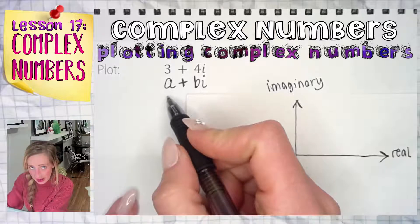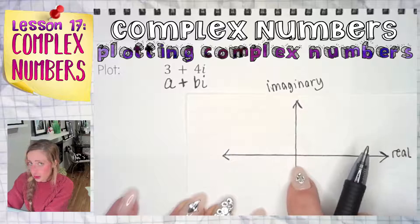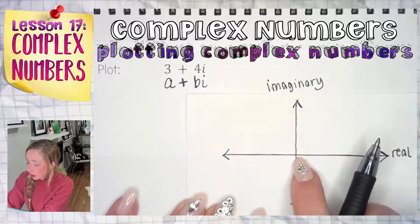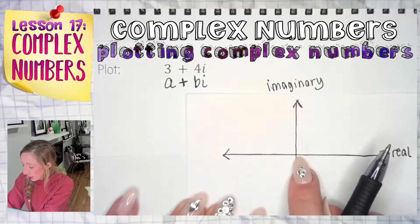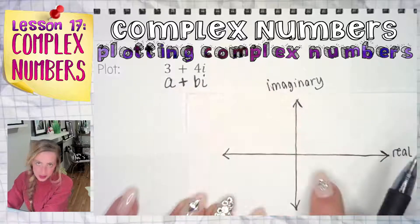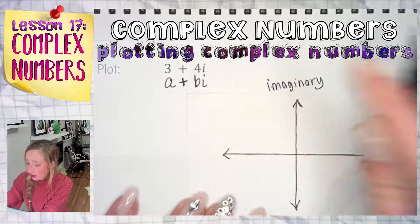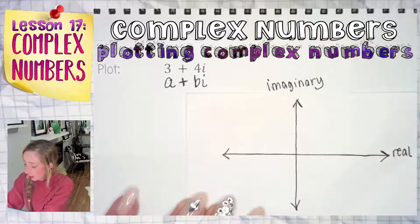So the a is sort of like our x value. It's going to move our coordinate point from the origin, which is where you would originate. It's going to move our point, our number that we're plotting here in the horizontal direction. If it's positive, it would go right. And if it's negative, it would go left. And then the B value is your imaginary component. And that's going to move us vertically up or down.